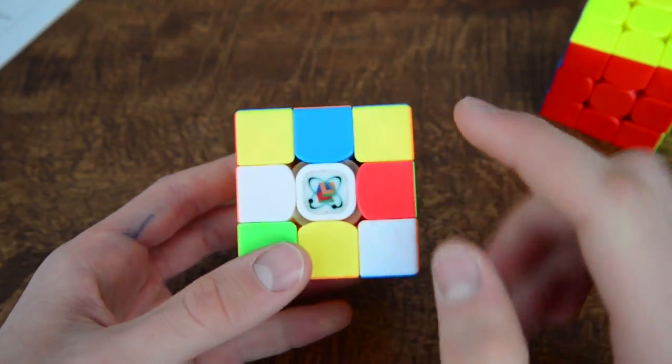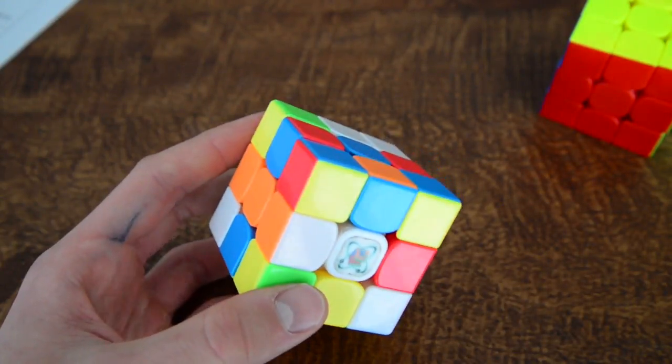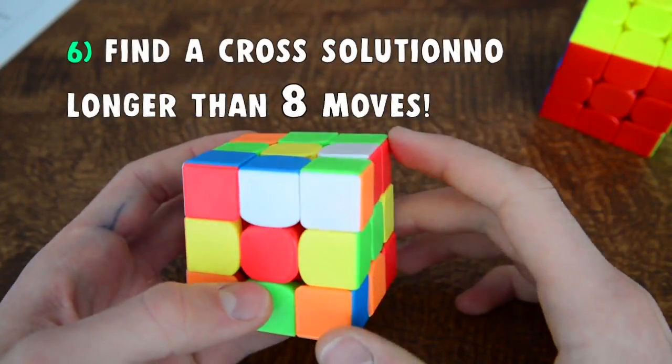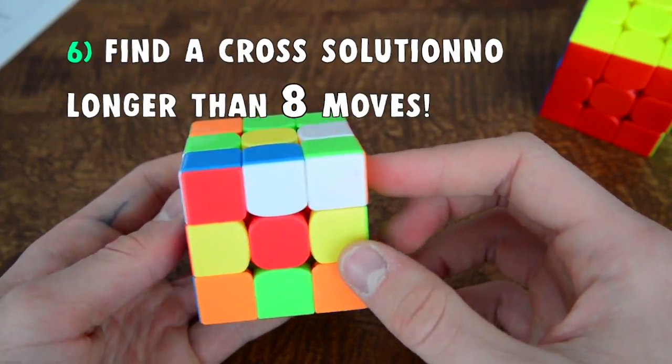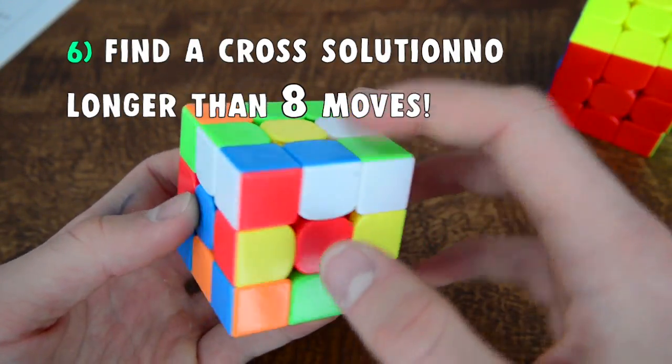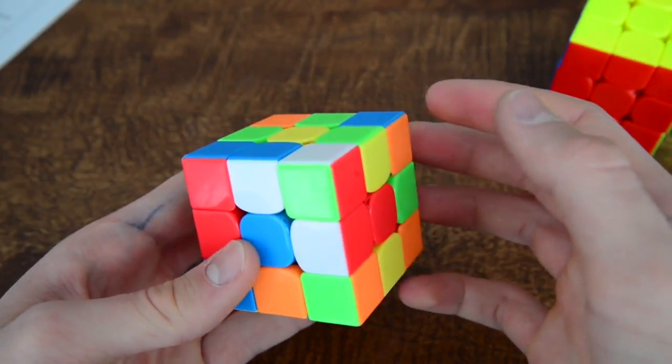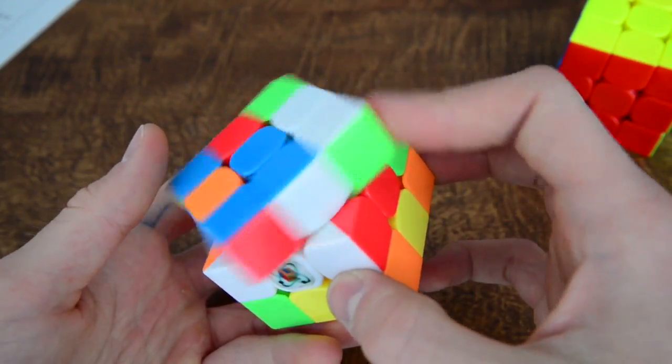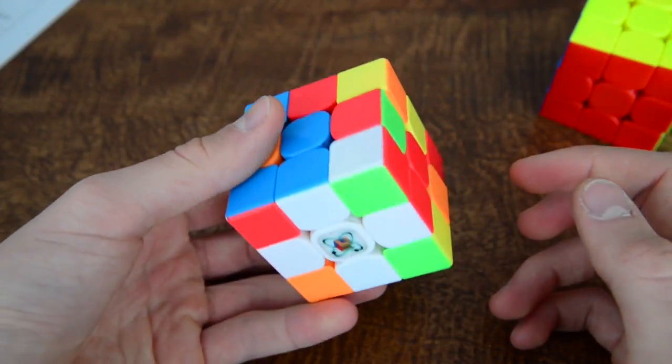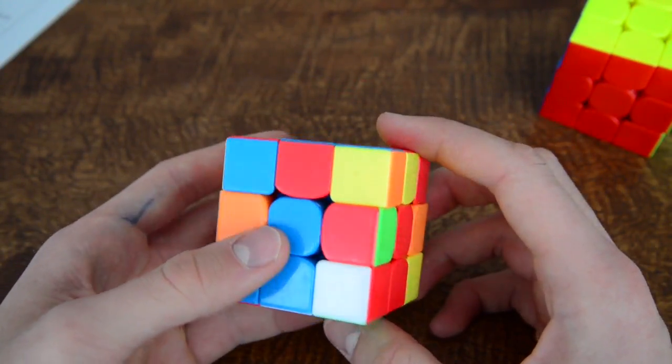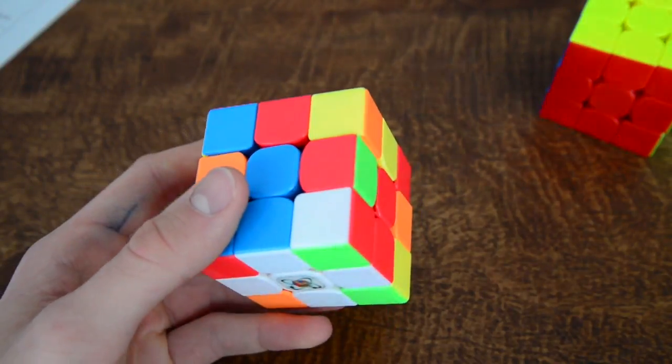Okay, so the next thing you need to do when you have found the cross color you're going to be solving on is you need to do the cross. Like we can just count the moves. This is a kind of easy cross so one, two, three, four and five, and to insert this one six, seven, eight moves. So it's an eight move cross and that's pretty reasonable.